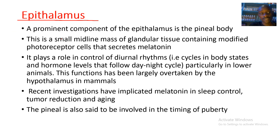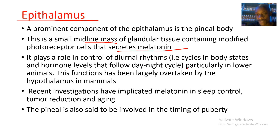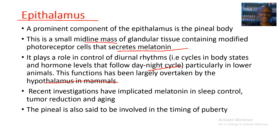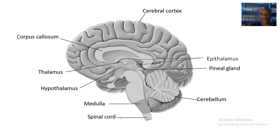The prominent component of the epithalamus is the pineal body, a small midline mass of glandular tissue containing modified photoreceptor cells that secrete melatonin. It plays a role in the control of diurnal cycles, body states, and hormone levels that follow the day-night cycle, particularly in lower animals. In mammals, this function has been largely overtaken by the hypothalamus. Recent investigations have implicated melatonin in sleep control, tumor reduction, aging, and timing of puberty.